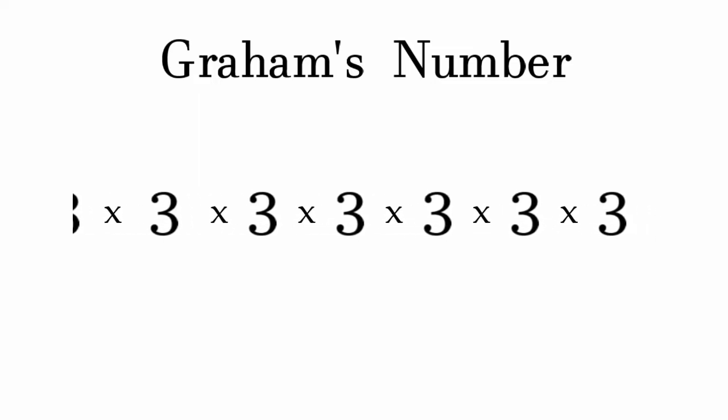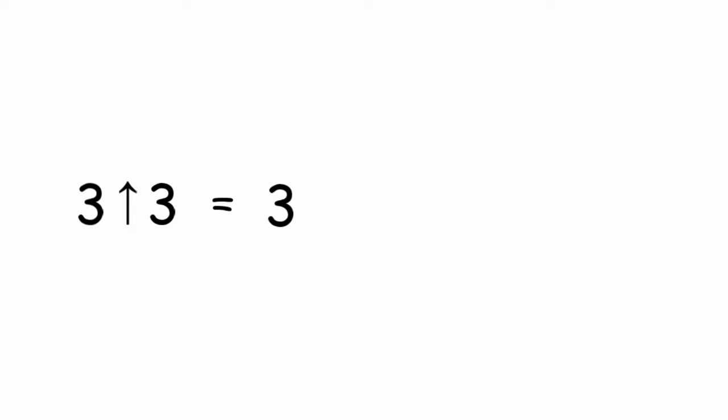It's basically a bunch of 3's multiplied out. Let's have 3 arrow 3. That's just the same as saying 3 to the power 3. 3 to the power 3 is equal to 3 times 3 times 3, which is equal to 27. Now let's have 3 double arrow 3.